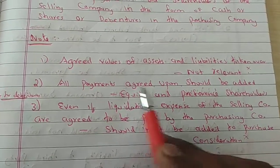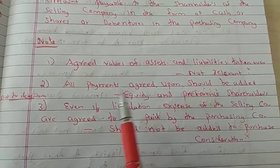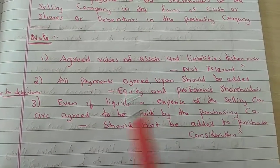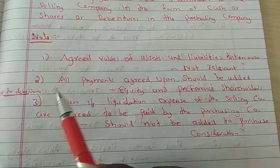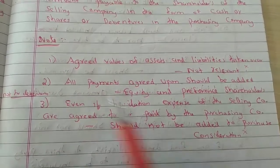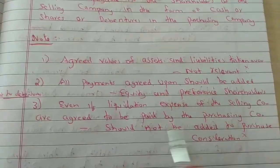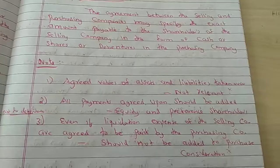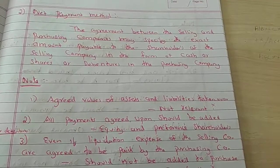Any payment agreed upon should be added to purchase consideration — but excluding debentures. It is added only for equity shareholders and preference shareholders. Keep that in mind. This is all about the Net Payment method. The next method is the Net Asset method.